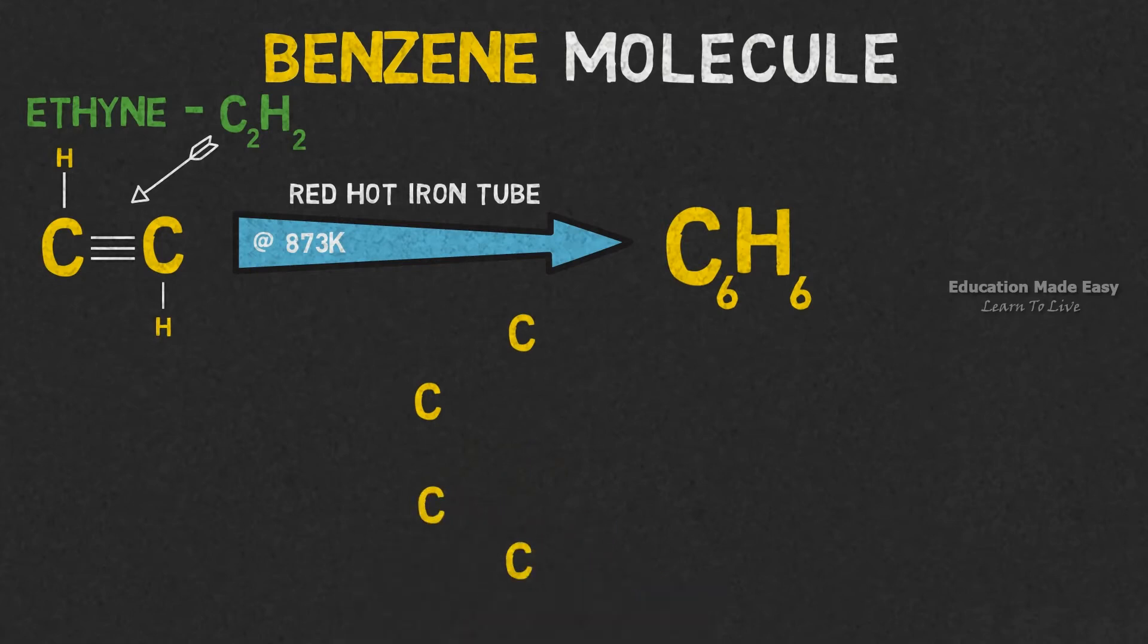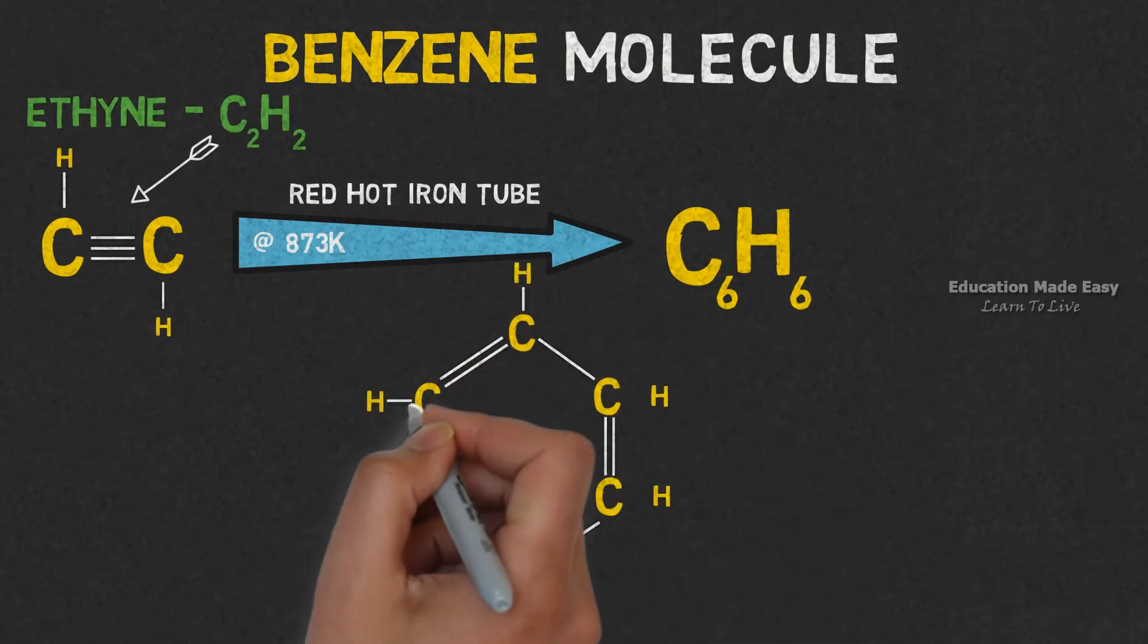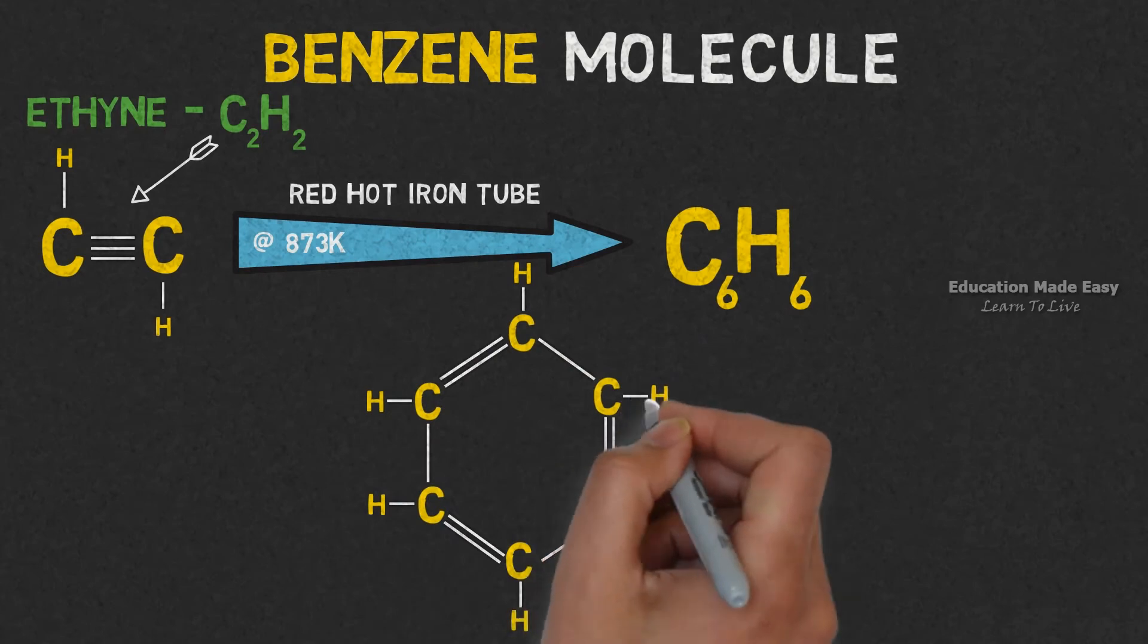There are six carbon atoms in the benzene molecule. Each of these carbon atoms is bonded to one carbon atom with a double bond and another carbon atom with a single bond. And there are six hydrogen atoms in the benzene molecule. Each of these hydrogen atoms are bonded to a carbon atom.